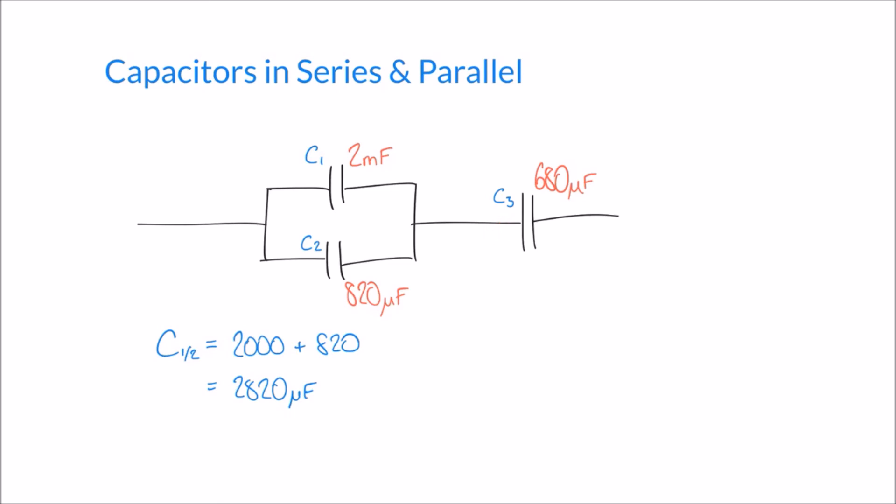And so we know that to work out capacitors in series, we have to use one of our two formulas that we looked at on the previous page. I'm going to use the second one that we introduced, which is to say that CT, we can say it's going to be C1 slash 2, 1 in parallel with 2, times C3 over C1 slash 2 plus C3.